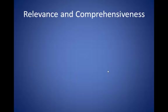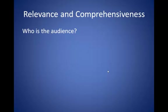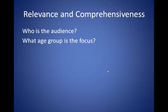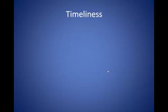The next two criteria, relevance and comprehensiveness, are closely related and considered together. Consider the intended audience for the site — is it for researchers or academics? The general public? What age group is the targeted audience? There is a lot of information on the internet for kids. Look for sites that are appropriate for college-level work and that present information in enough detail to be of use.